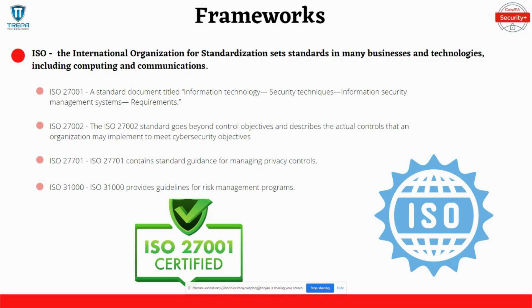ISO 27001 is an older framework that covers information technology in general. ISO 27002 goes beyond just the objectives of securing IT systems and will show you how to actually harden and secure those systems. ISO 27701 contains standard guidance for privacy controls in your network. Then ISO 31000 provides guidelines for risk management programs.